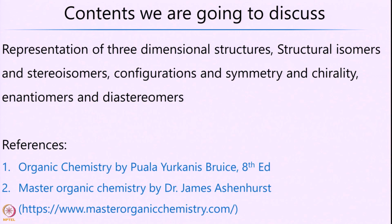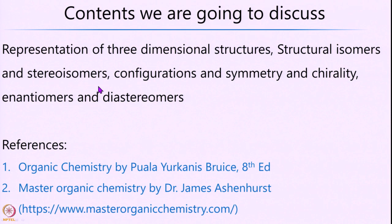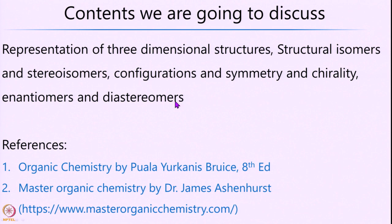The contents we are going to discuss are as follows. First, we will look at the three-dimensional representation of organic structures or molecules in space — why is that important and how did it come about. Followed by structural isomers and stereoisomers, their different properties, examples, and significance. Then we will look at configuration, symmetry, chirality, and further delve into enantiomers and diastereomers.